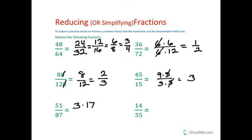Same thing with 87. You might think that's prime. But if you add 8 and 7, you get 15. 3 goes into 15. So 3 will go into 87. And it will actually go in 29 times. So this fraction can be simplified to 17 over 29.